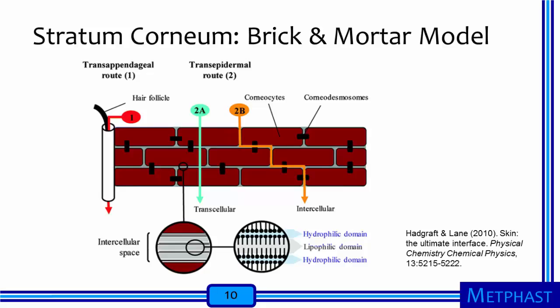This is a model of the stratum corneum — the outermost layer of the epidermis — depicting it like bricks and mortar. The bricks are the cells and the mortar is the material between the cells. Different pathways exist by which agents can penetrate the stratum corneum. One pathway is the transepidermal route through skin pores. Agents moving by the transcellular pathway go right through the cells, which is possible for water-soluble agents because the cells are hydrophilic. Fat-soluble agents penetrate via the intercellular route because the material between the cells — the mortar — is lipophilic.